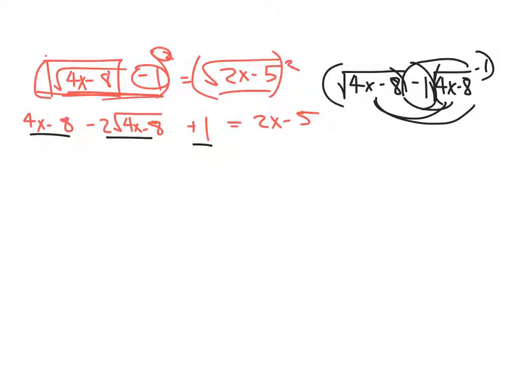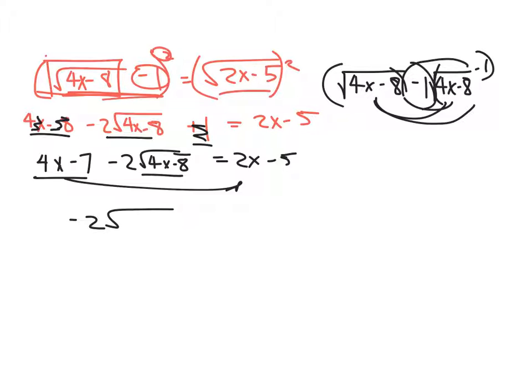That should be a square minus 1 times 4x minus 8 radical minus 1. Multiply those together using the FOIL method, and you will get the same answer that I did here. First one, second middle term, last term. Okay. So anyway, let's pull as much of this stuff as we can over to the other side. So, let's go ahead and isolate things. So we have 4x minus 7, gets rid of that, that, and that, minus 2 square root of 4x minus 8 equals 2x minus 5.